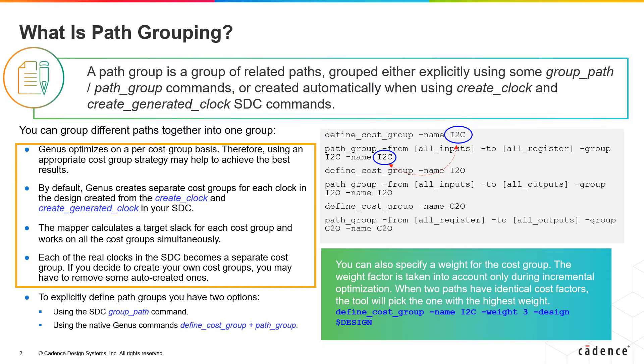To work around this default behavior, group timing paths into different cost groups. When multiple cost groups exist, Genus will optimize the WNS path in each cost group. If it cannot meet the timing goal for the WNS path in a specific cost group, then Genus will continue to try and optimize the WNS path in each of the other cost groups.